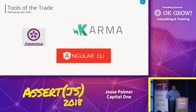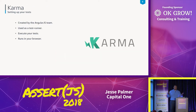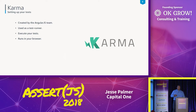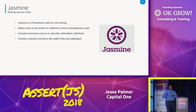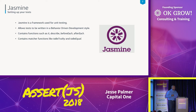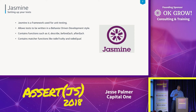Karma was created by the Angular team around 2013. It's just a test runner — you can execute all your tests and it opens up a browser which you can use to debug. And there's Jasmine, which is a unit testing framework. It allows tests to be written in a BDD style, and there are a lot of functions: it, afterEach, beforeEach, describe, and expect. There are also tons of matchers like toBeTruthy, toEqual, and so on.